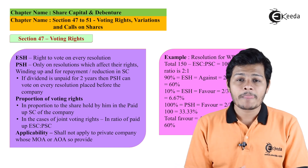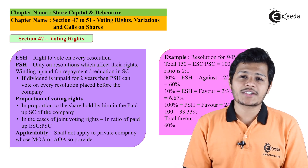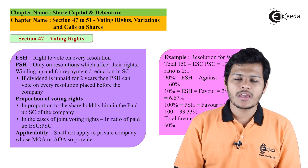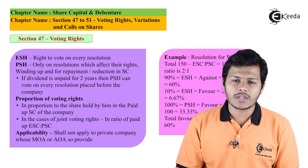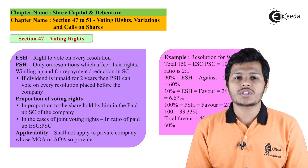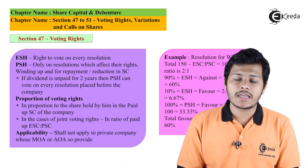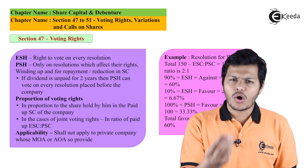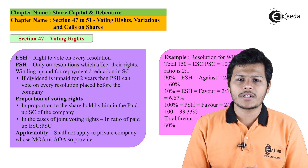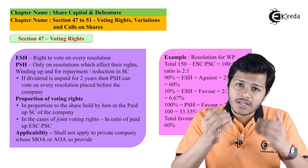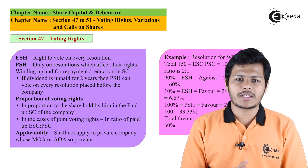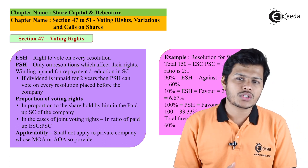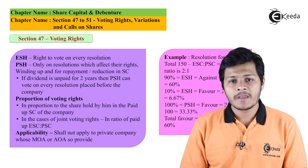Section 43 में हमने देखा है कि preference share capital क्या होता है और equity share capital क्या होता है। Kinds of share capital की classification में सबसे पहले authorized share capital, paid-up share capital, subscribed share capital, called-up share capital - ऐसे total 5 types of classification of share capital हम देख चुके हैं।